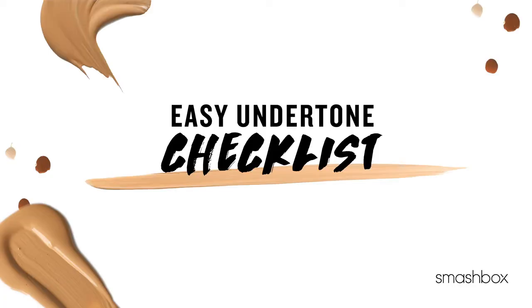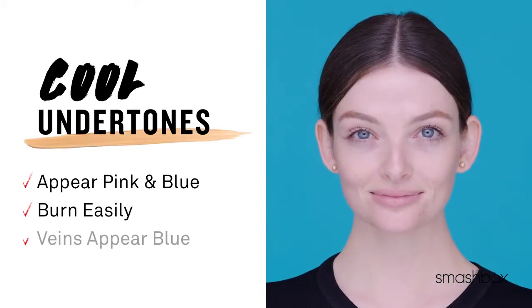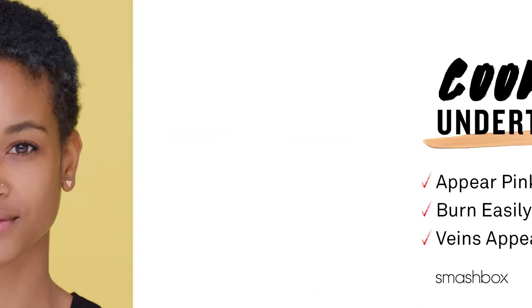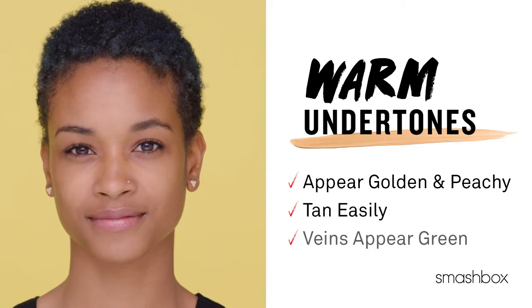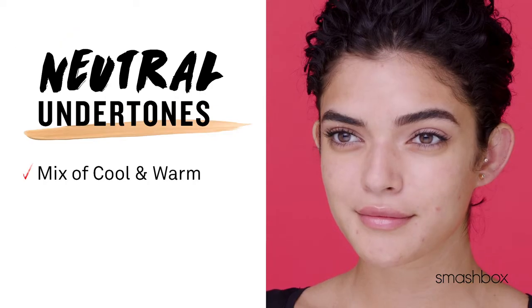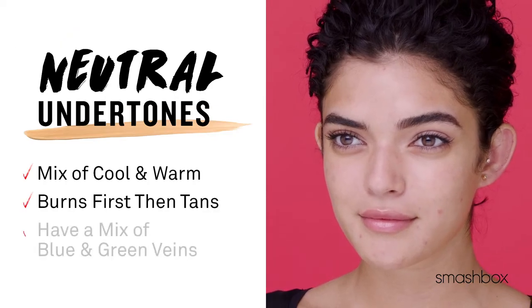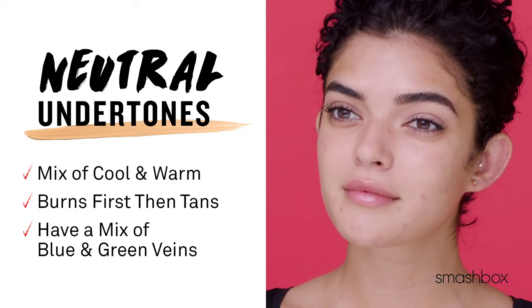Need help deciding? Well, here's your checklist. Cool undertones burn easily and have bluer veins. Warm undertones tan easily and have greener veins. Neutral undertones burn and tan easily and have a mix of blue and green veins. Now that you know your undertone, let's find your studio skin foundation shade.